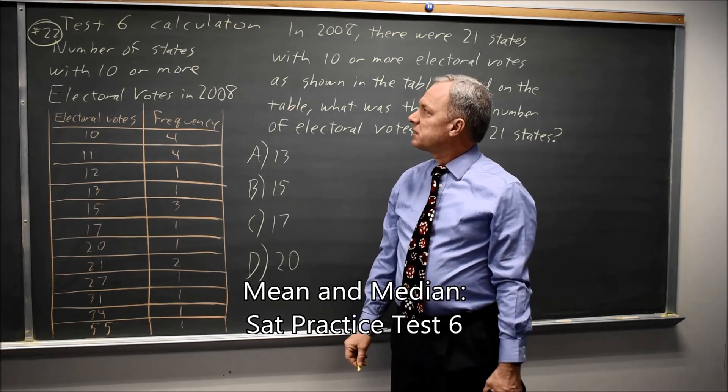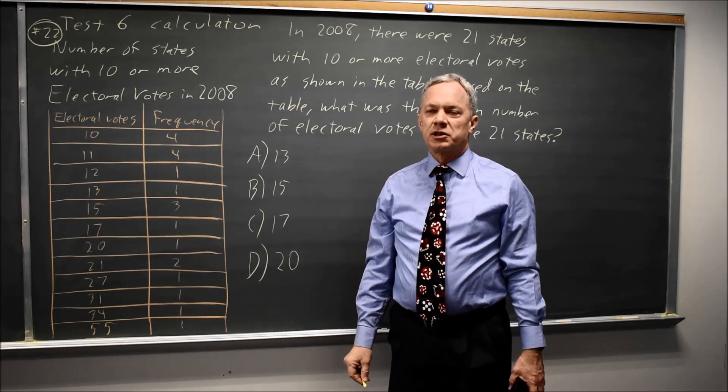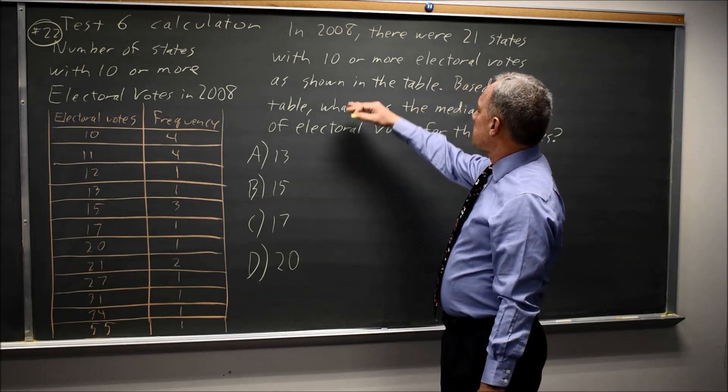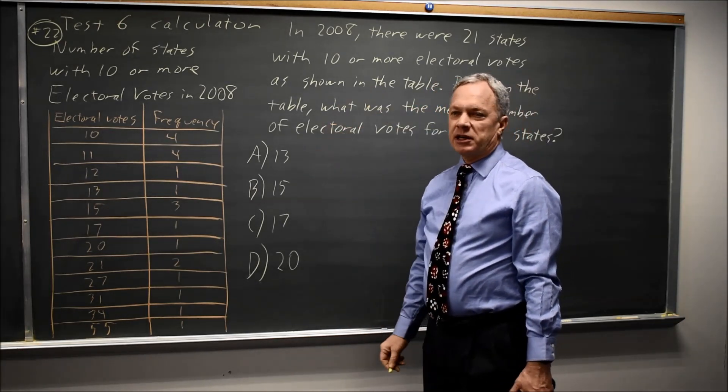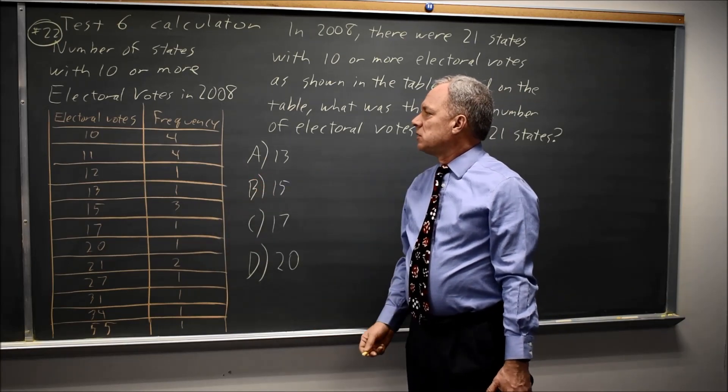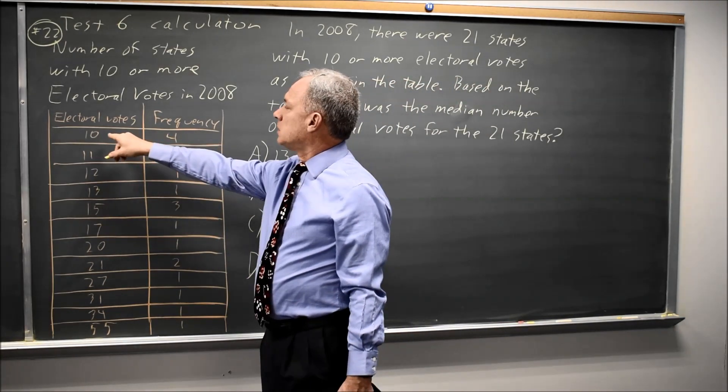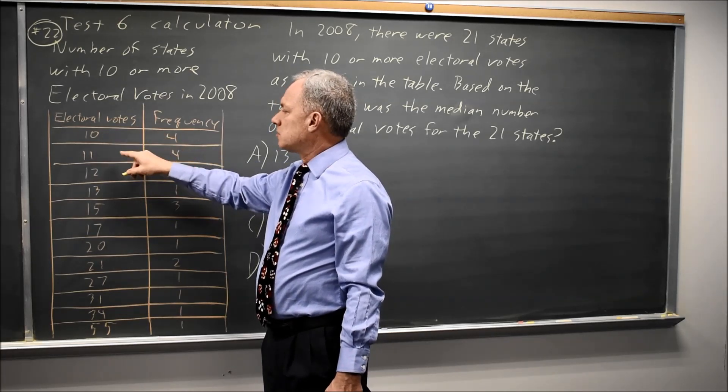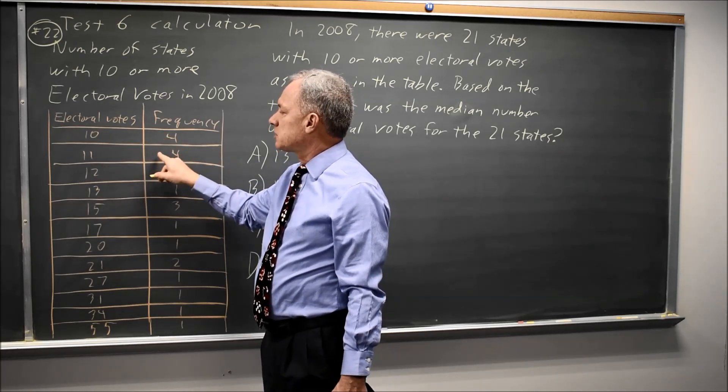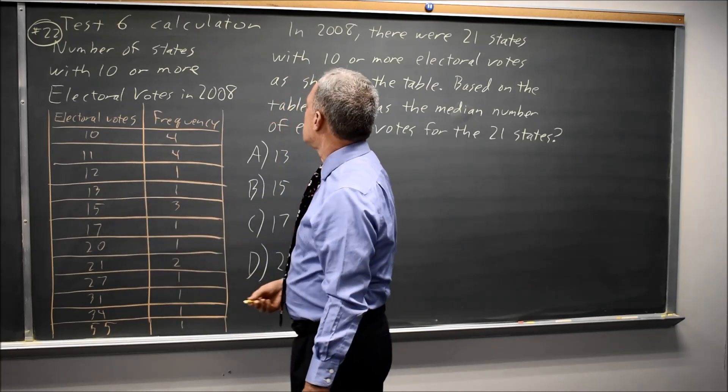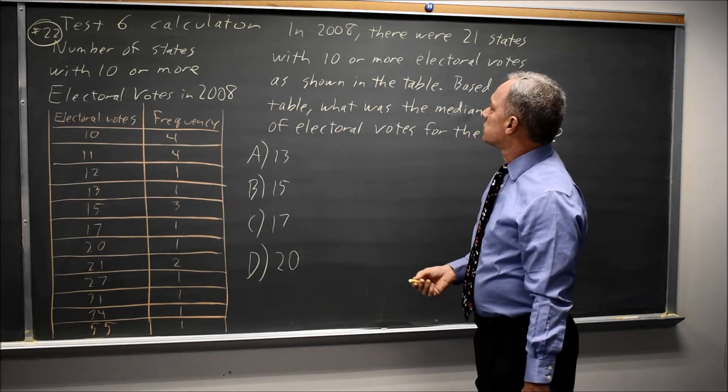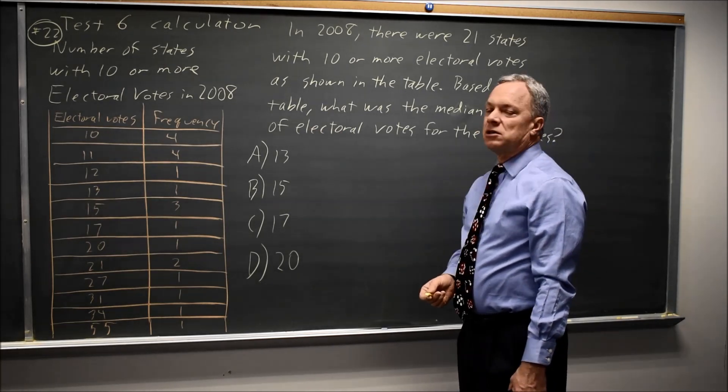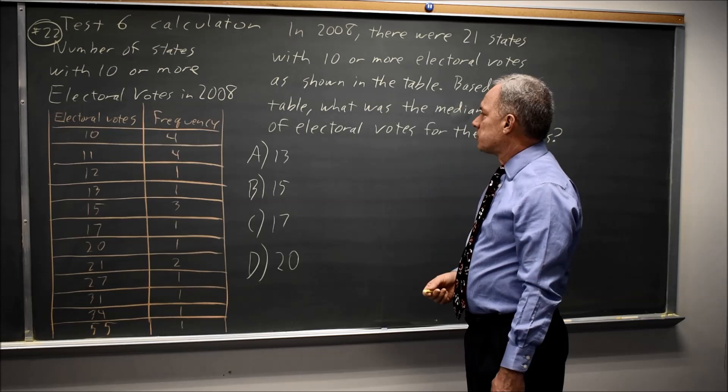This is SAT Test 6, Calculator Section, Question 22. The College Board is asking about the median from a data set where they give you a table with values and frequency. For example, the value 10 had four states with 10 electoral votes, value 11 also had four states. If there's 21 states in the table, what is the median number of electoral votes for these 21 states?